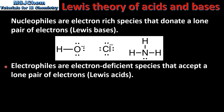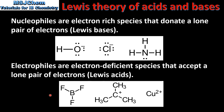Electrophiles are electron-deficient species that accept a lone pair of electrons. They are Lewis acids. Here we have some examples of electrophiles: boron trifluoride, the carbocation, and the copper 2+ ion.